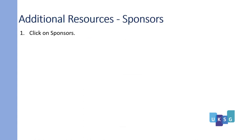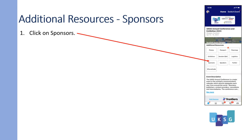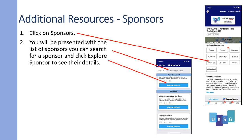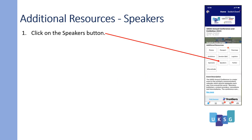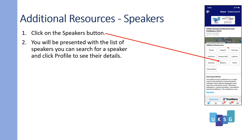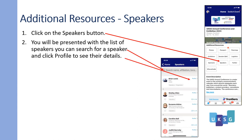Looking at sponsors. Click on sponsors and you are presented with a list of sponsors. You can search for a sponsor and click 'explore sponsor' to see their details. The sponsor's details then appear. Speakers: click on the speakers button. You are presented with a list of the speakers, where you can search for a speaker and click 'profile' to see their details.